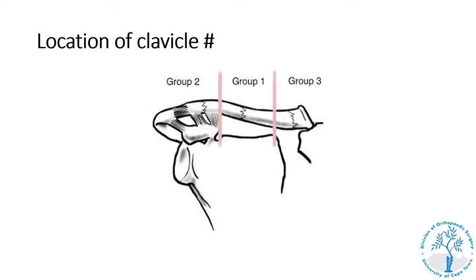Group two injuries are lateral third clavicle fractures. There is a higher complication rate if they are displaced and treated non-operatively, so only very minimally displaced or undisplaced fractures are treated non-operatively. All group two lateral third clavicle fractures should be referred to an orthopedic surgeon. Group three fractures — medial third fractures — indicate high energy trauma. These almost never require surgical fixation, but it is important to rule out other life-threatening chest injuries.